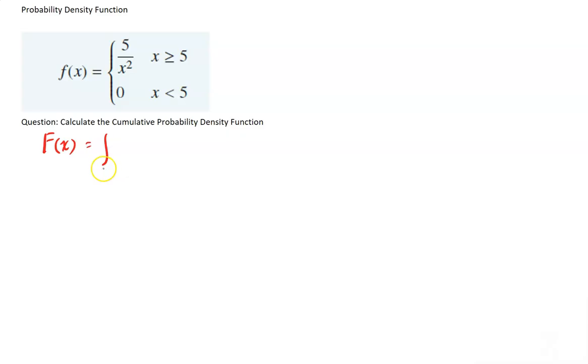F of x is equal to the integral. And this will be a little bit surprising. We're going between 5, that's the lower bound, no problem there, and x. And that's going to allow us to put x in there and create a cumulative probability density function. And we're integrating our function 5 on x squared with respect to x.